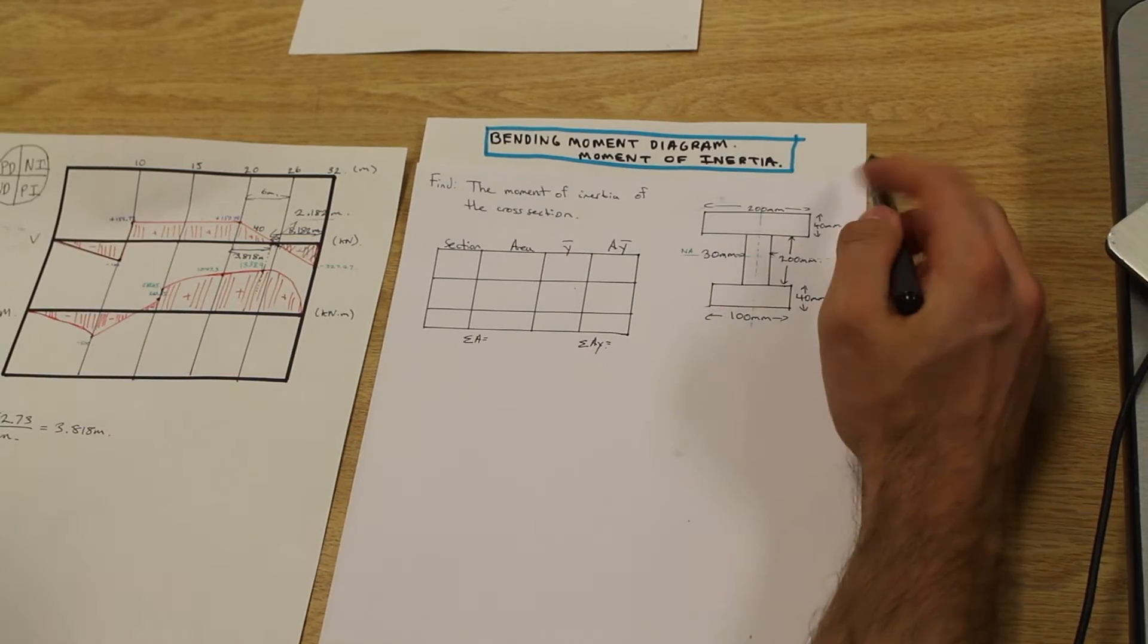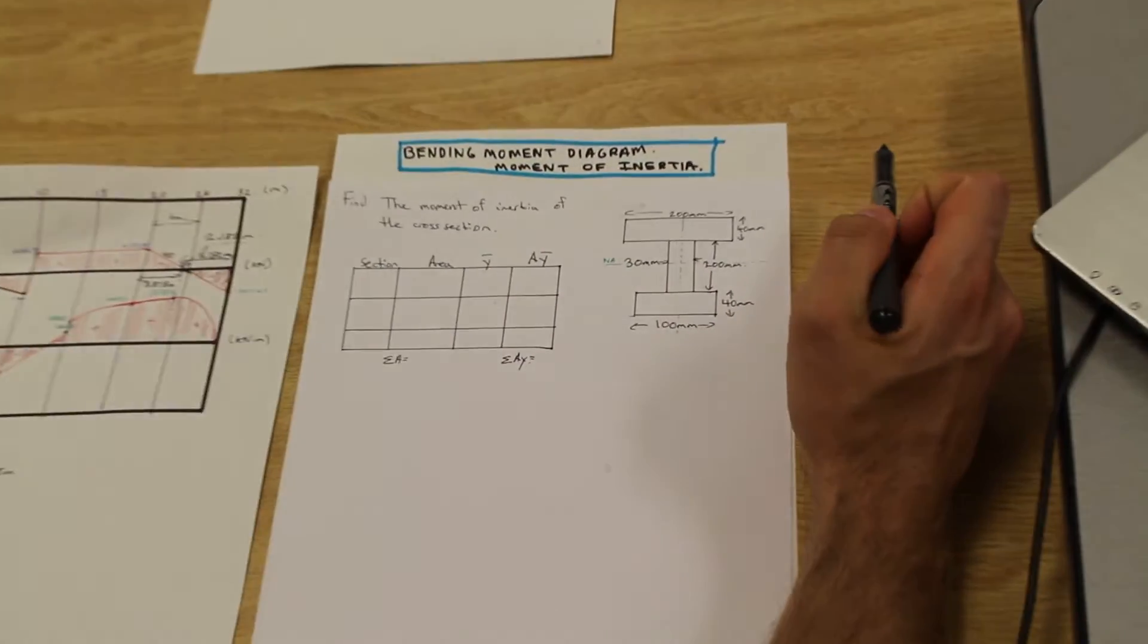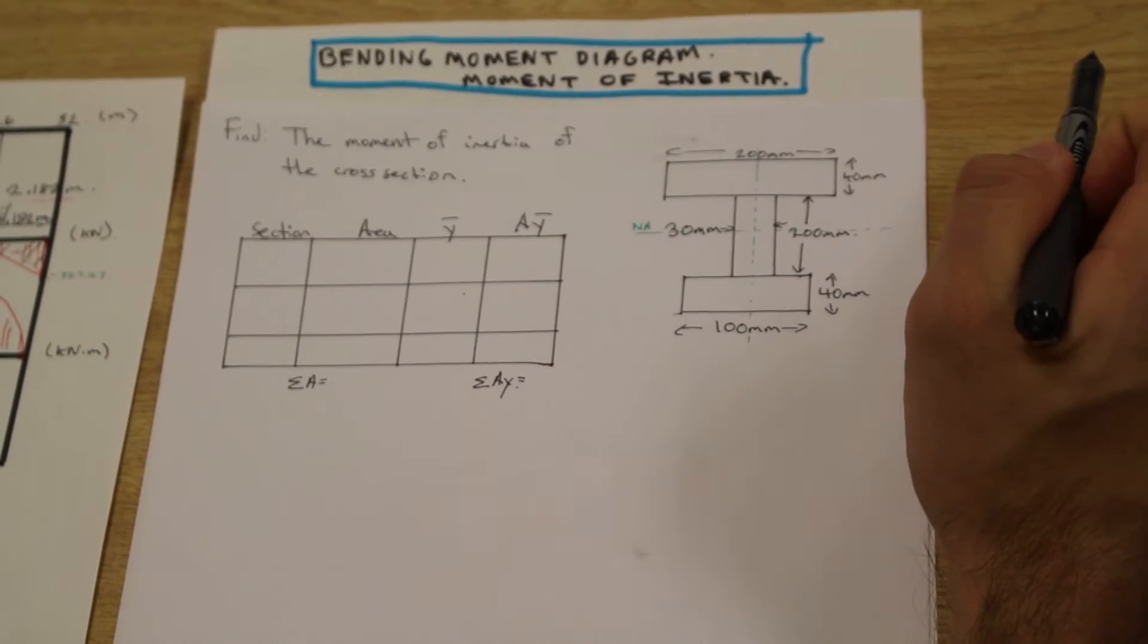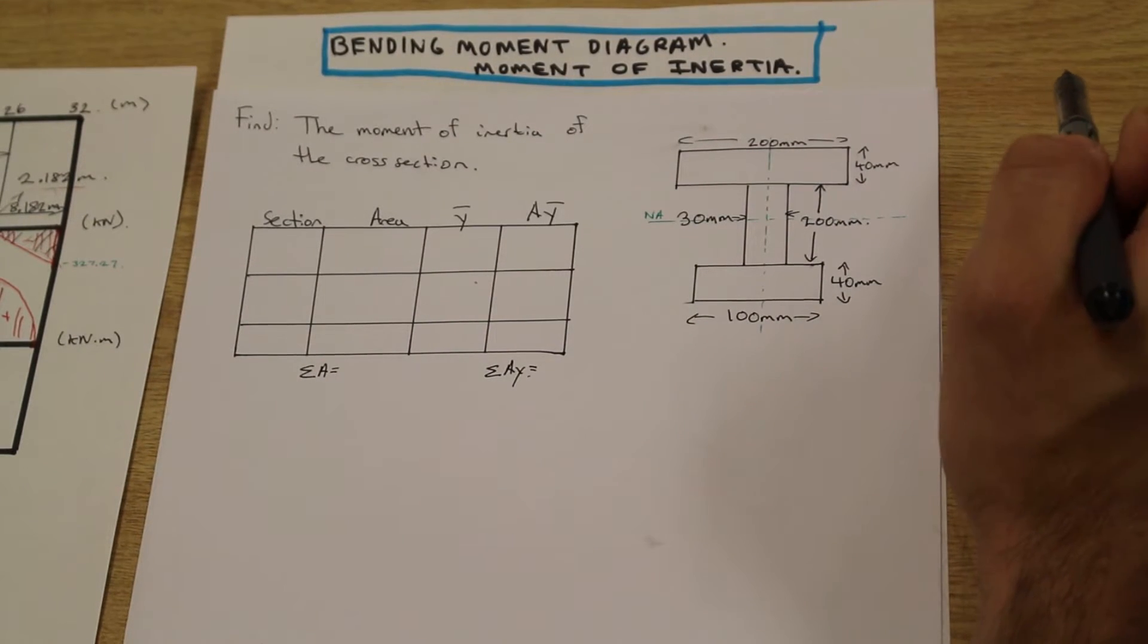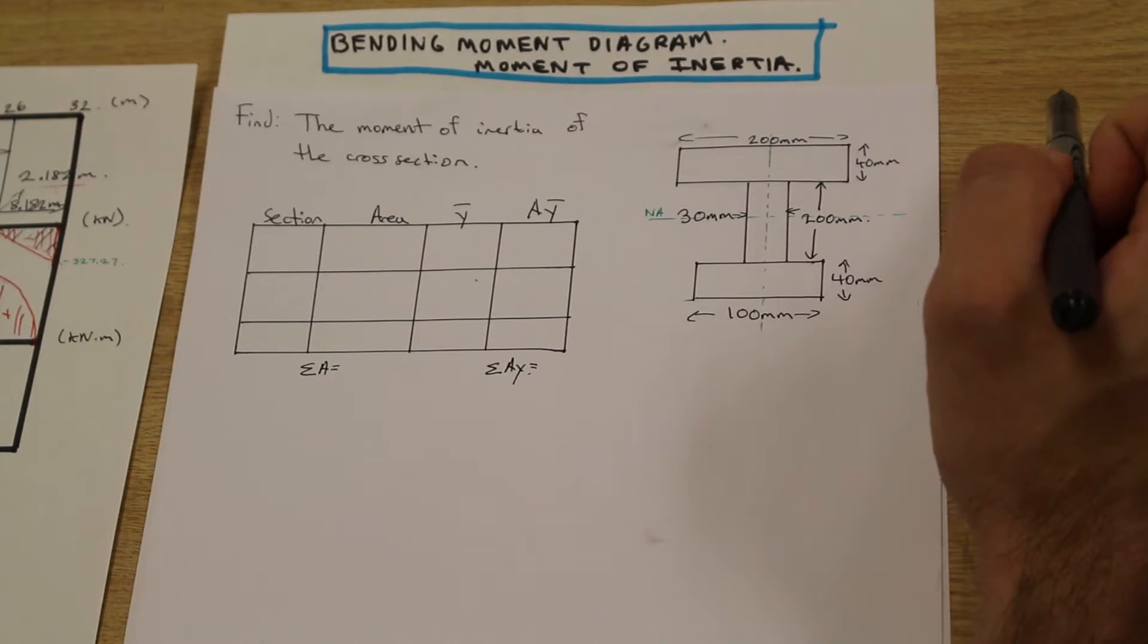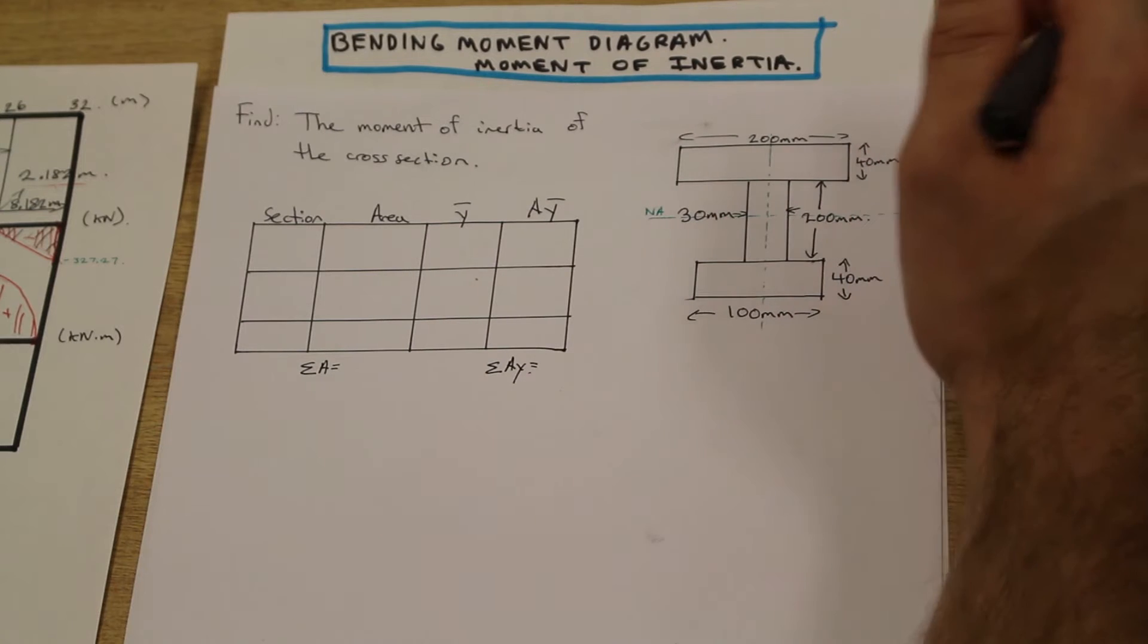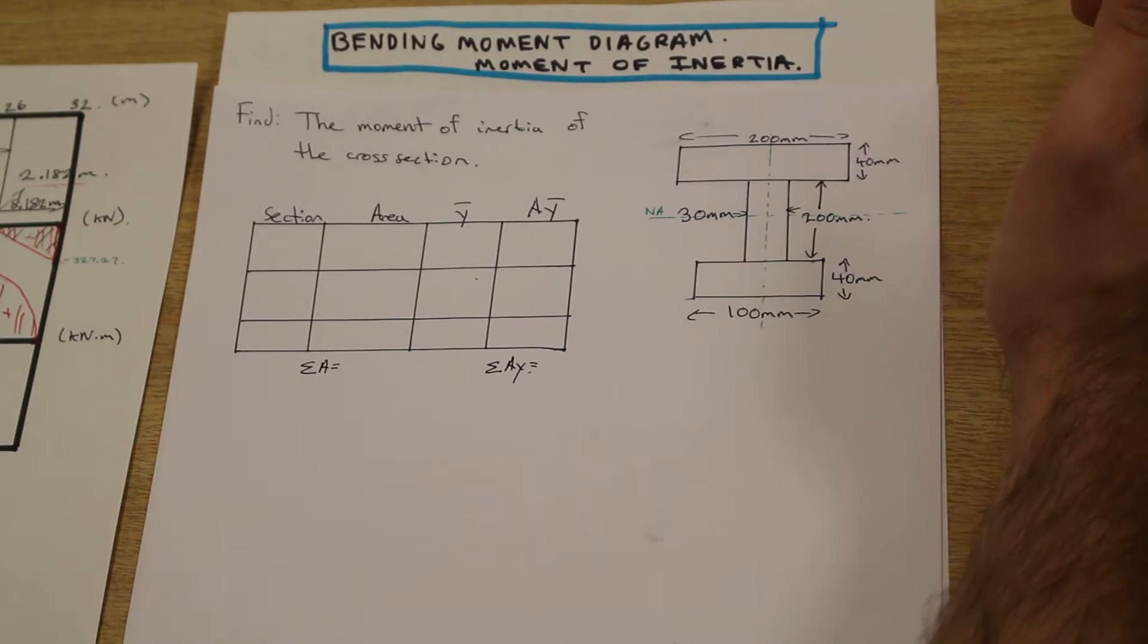This video is on the continuation of the bending moment diagram, but it's on the moment of inertia. We discussed this in strengths one previously; however, it's coming back now. You're gonna have to be able to do it quick and efficiently. What is the moment of inertia? Essentially it's a measure of resistance to bending of a beam or of a cross section or of any shape.